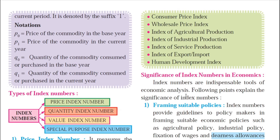In the previous video lectures we studied how exactly index numbers act as a statistical tool to measure changes in economic variables. We also studied about the types of index numbers: price index number, quantity index number, value index number, and special purpose index number. Index numbers are statistical tools to analyze changes in various economic variables or group of variables in the economy, and are helpful in understanding changes and making strategic analysis.